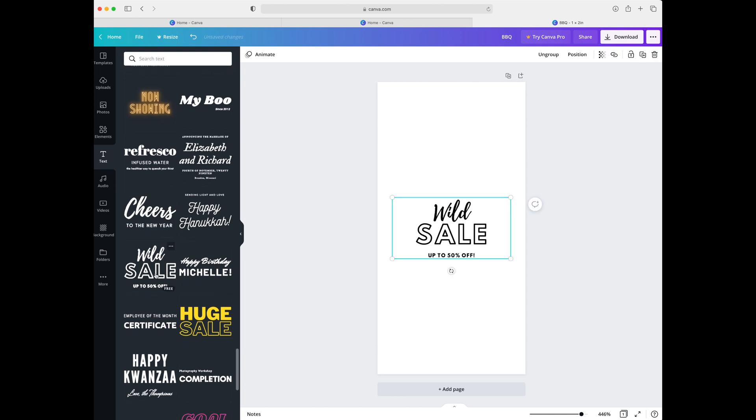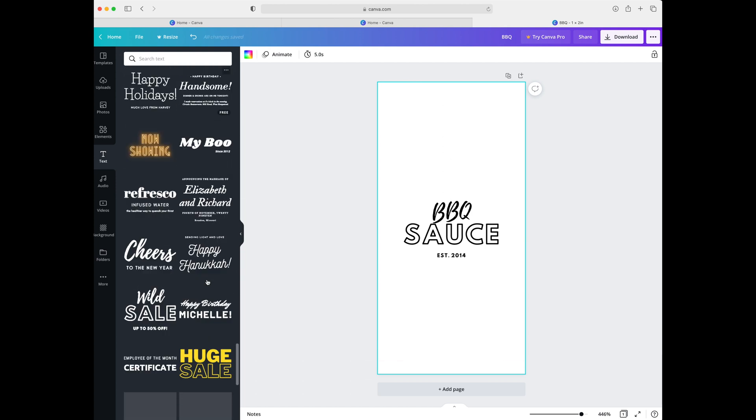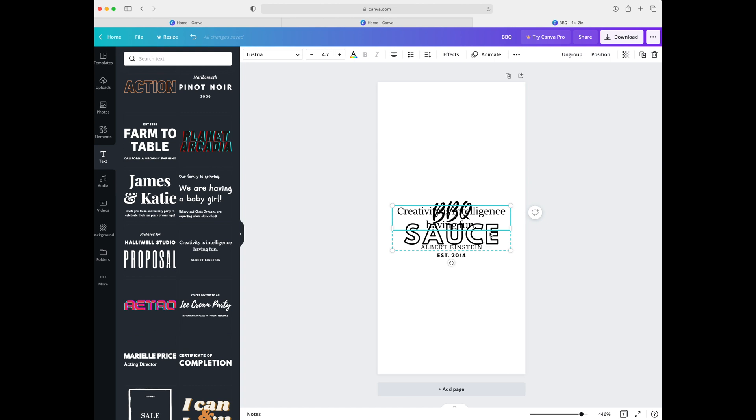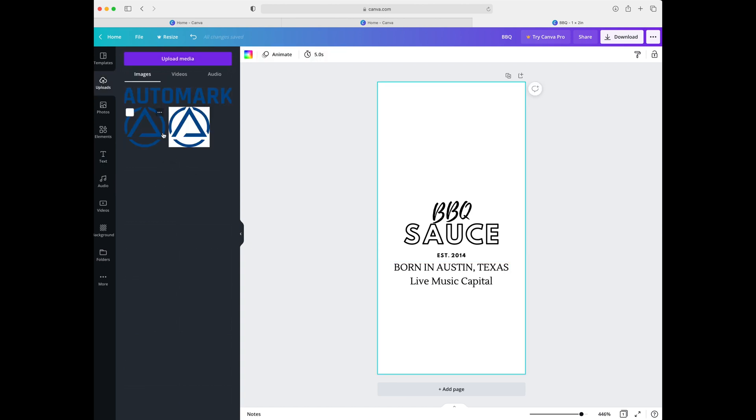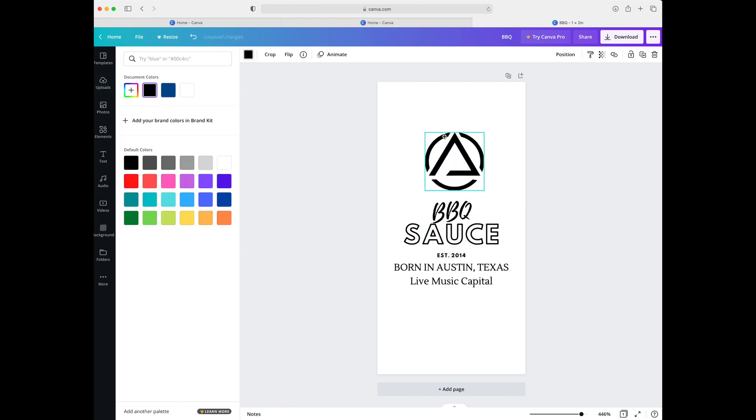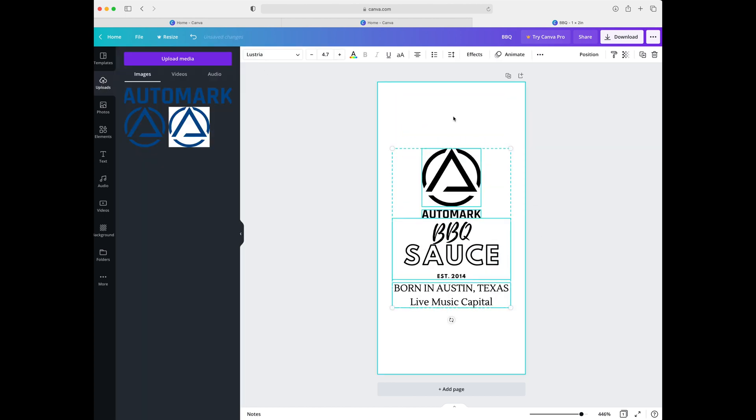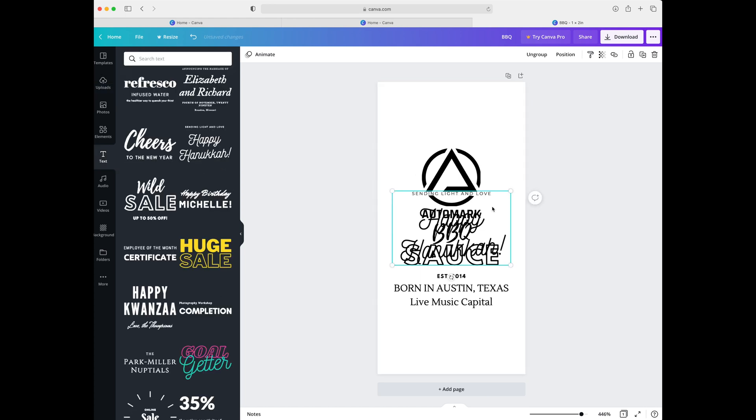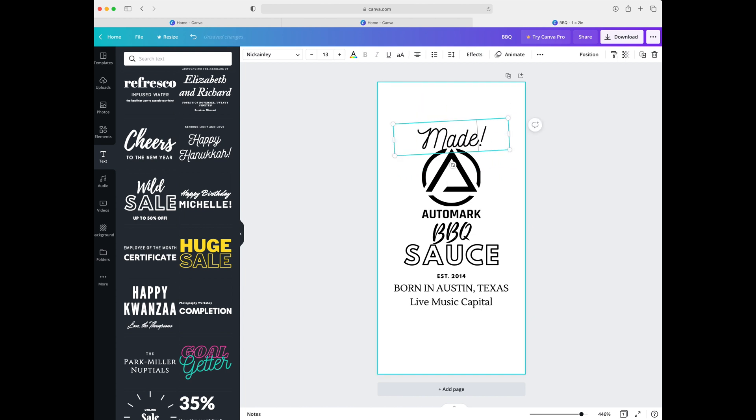Then we start selecting some fonts we like. Being in Austin, Texas, I figured barbecue sauce would be appropriate. Let's drag and drop some more items and have some fun with this. We have imported our logo and we'll turn it black for this. Then we center it. Kind of like to put something up top to show the detail that can be achieved from pad printing.